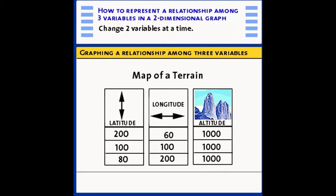Suppose that at a latitude of 200 feet north and 60 feet east, we have an altitude of 1,000 feet. Suppose at another point, a latitude of 100 feet north and 100 feet east, we have an altitude also of 1,000. And finally, a third combination. Notice the trick here is, I'm holding my altitude constant as I change latitude and longitude. All of these combinations of latitude and longitude have a constant altitude of 1,000.